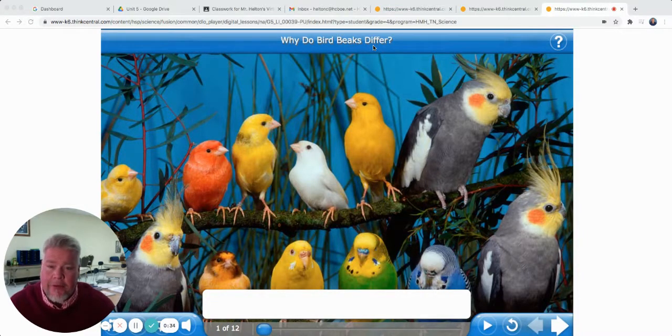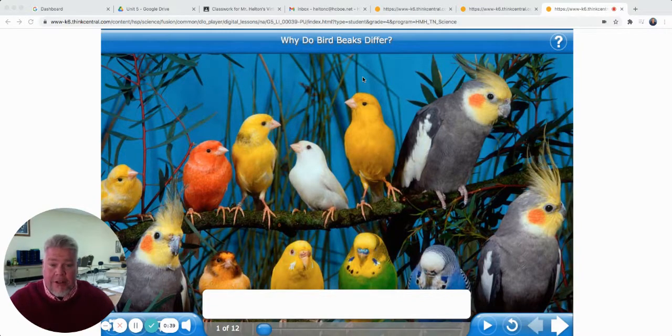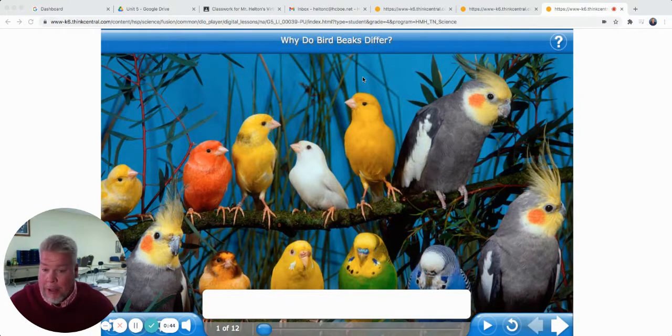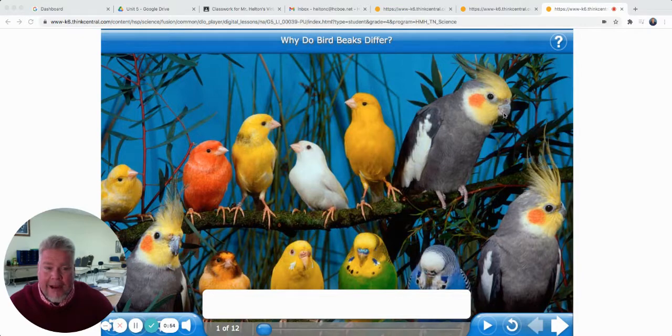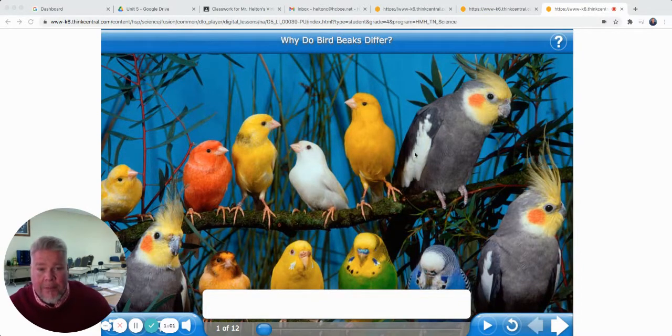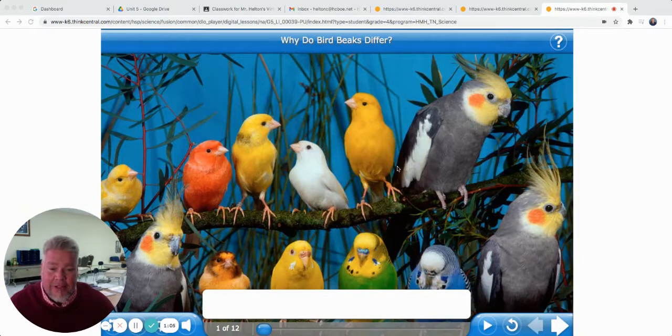Today we're going to do a digital lesson on why do bird beaks differ. If you remember back before fall break, we were talking about animal adaptations, how animals are adapted to survive in their environment. Depending on the environment that a bird lives in, it's going to need a differently shaped beak for different reasons. Maybe a beak like this, it's powerful to crack nuts and things like a parrot or a cockatiel. We're going to see some more types of beaks or bills that do different tasks in the environment where the birds live.